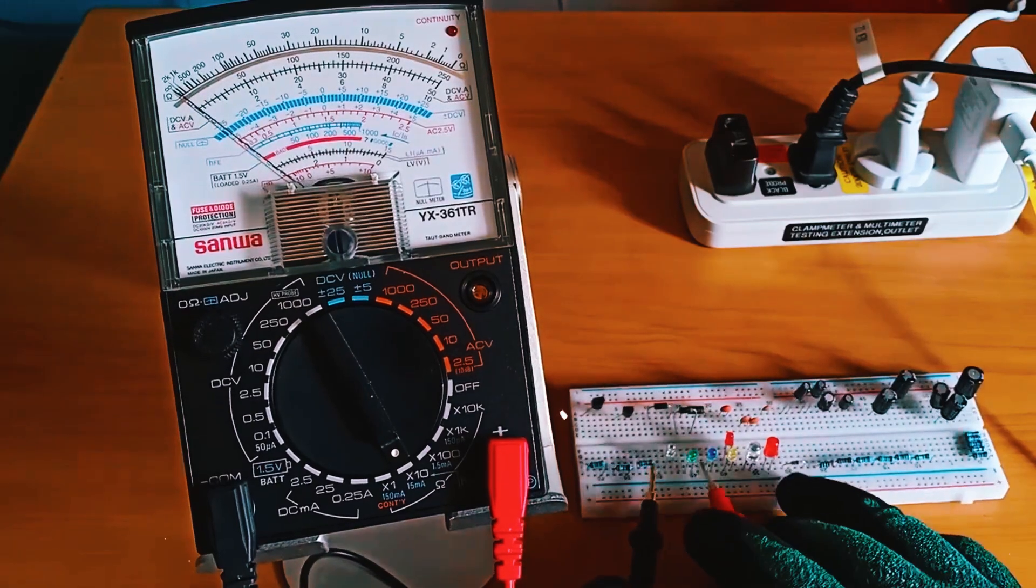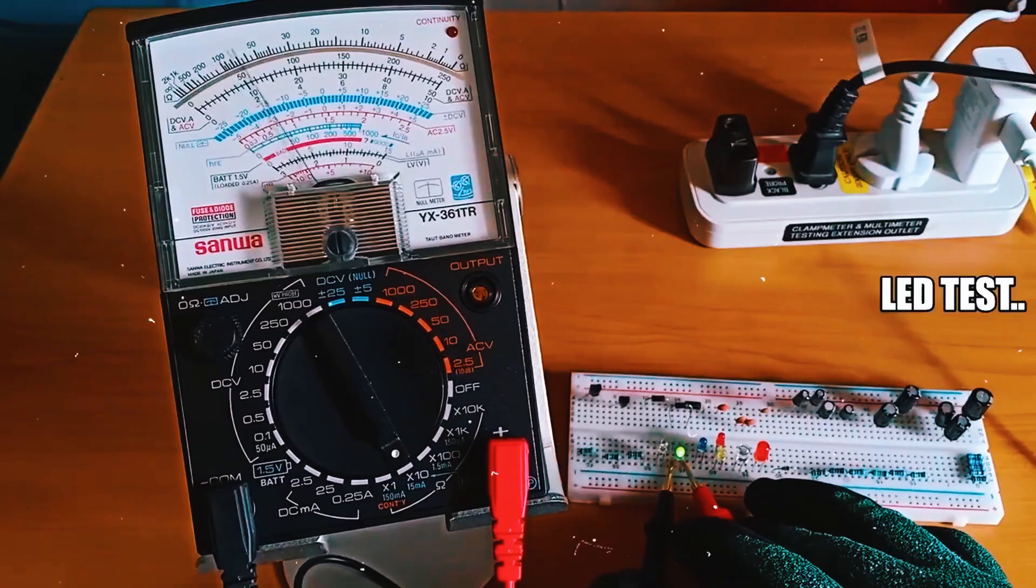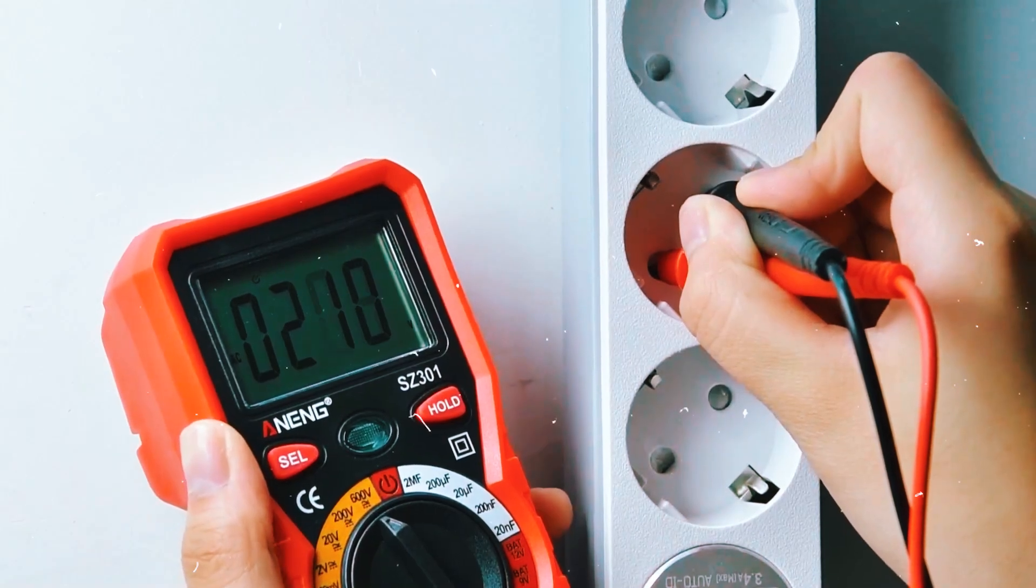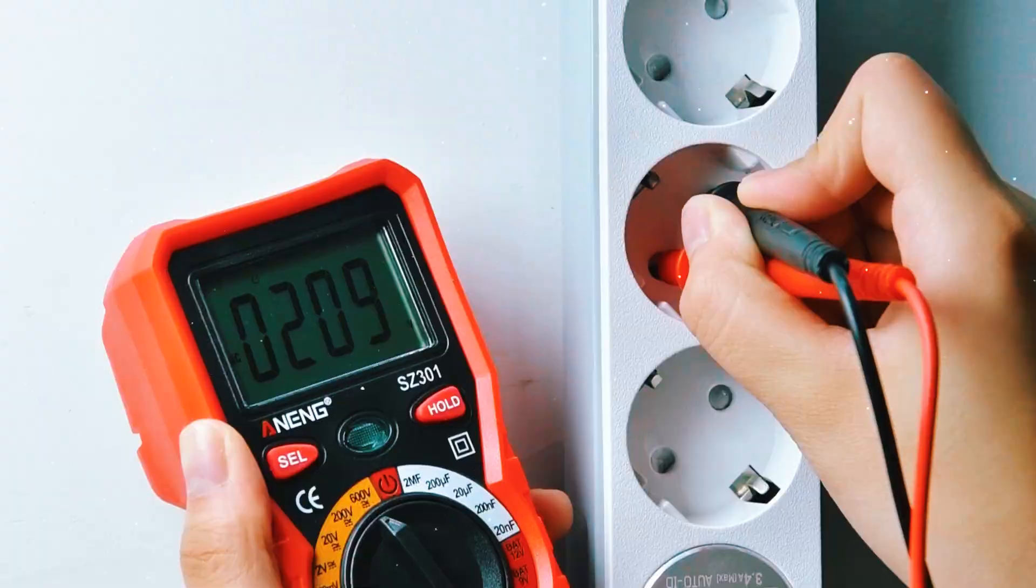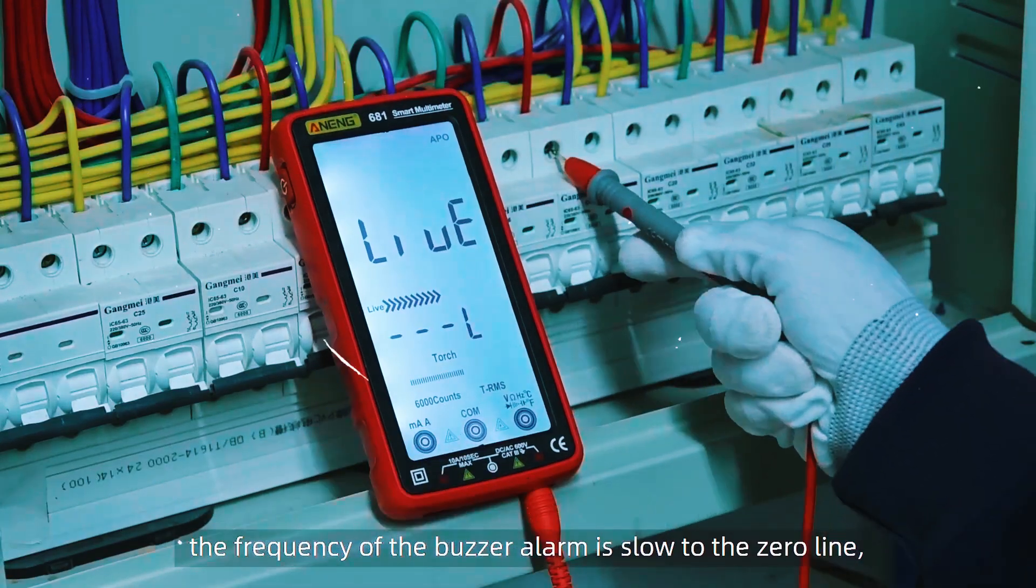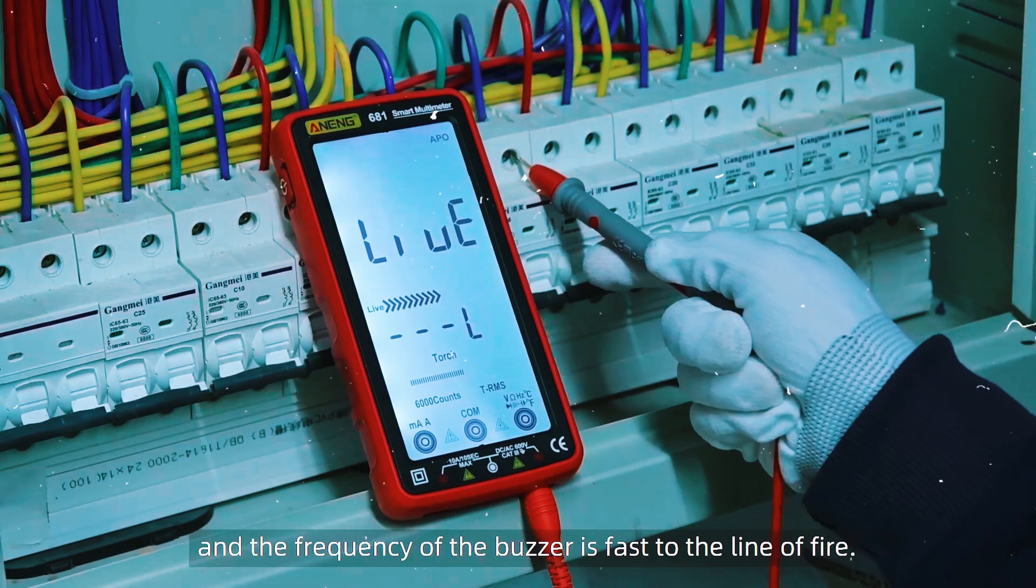It shows you smooth transitions instead of just jumping to a fixed reading. In terms of accuracy, digital multimeters generally take the win. They give you precise readings down to the decimal, which is great if you're working with sensitive equipment.